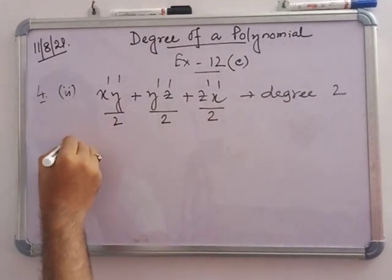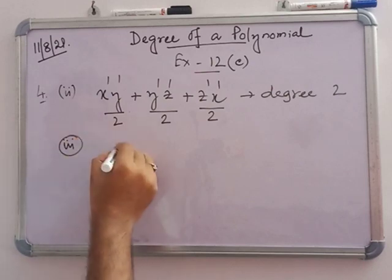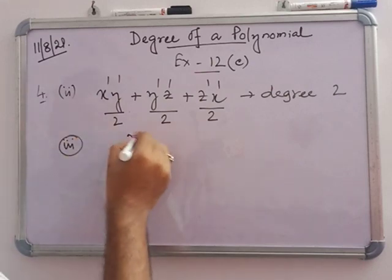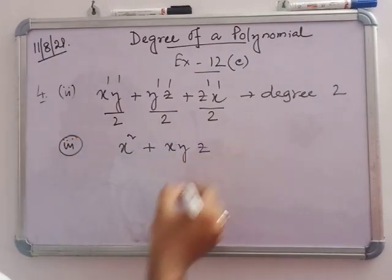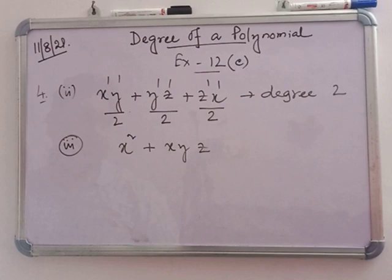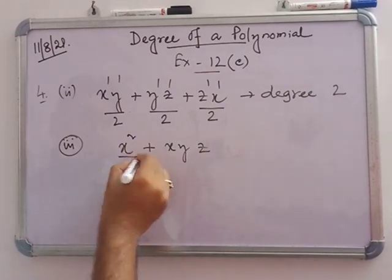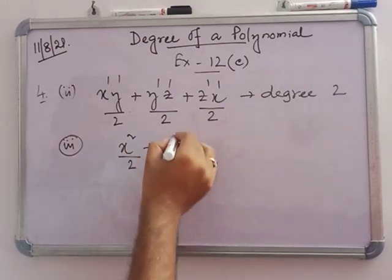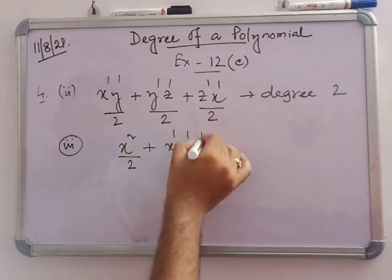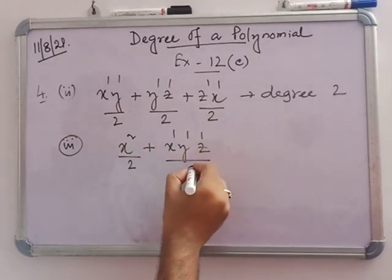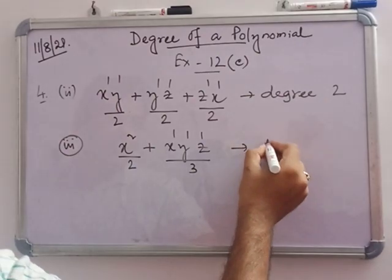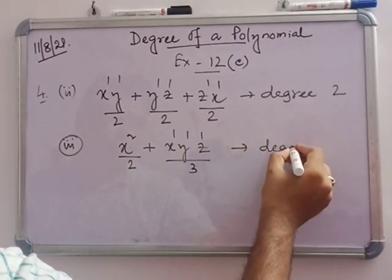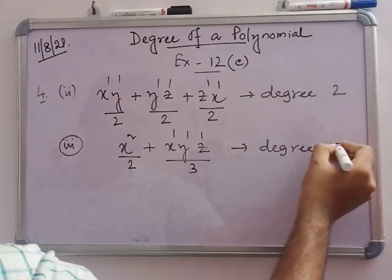Number 3: x squared plus xyz. For x squared the degree is 2, and for xyz the sum of powers is 1 plus 1 plus 1 equals 3. So the degree is 3.